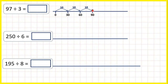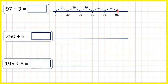Instead, we can just count up in 3s. So 3 more than 90 is 93, then another 3 takes us to 96. But if we jumped another step of 3, that would take us to 99, and that would be too many. To get to 97 from 96, we just need one more — not one more step of 3, but just an extra 1. So that extra 1 is our remainder.